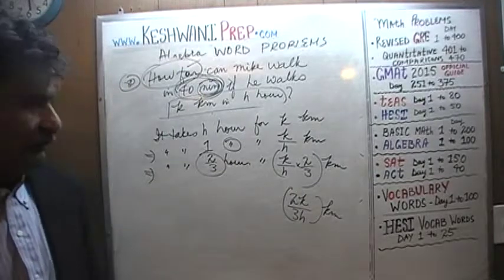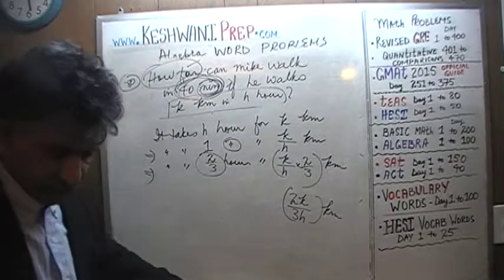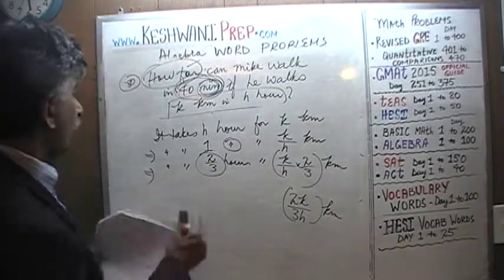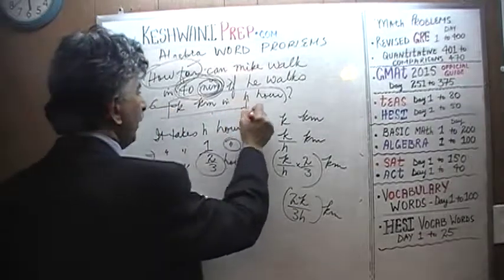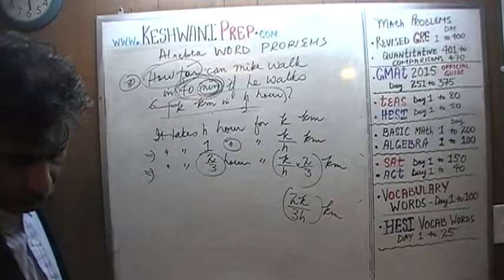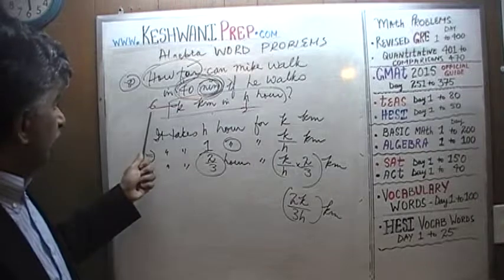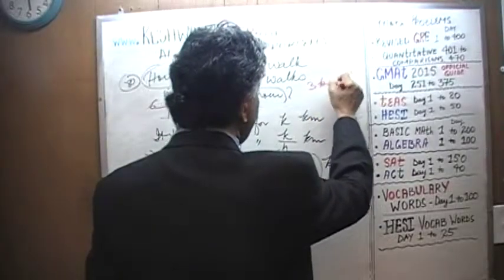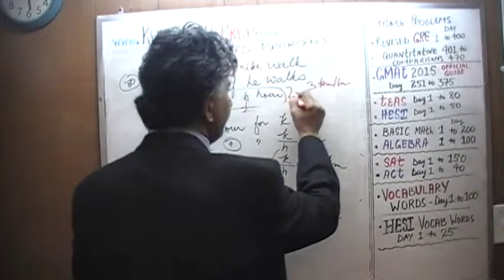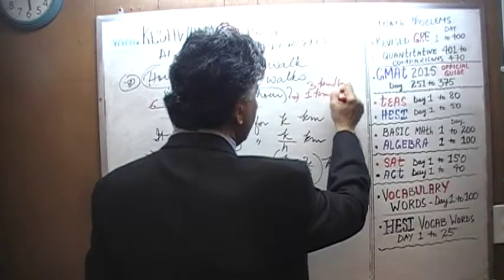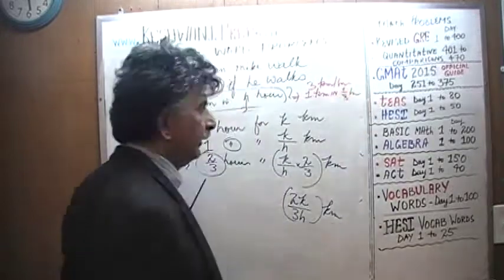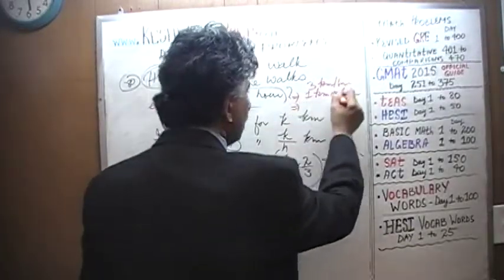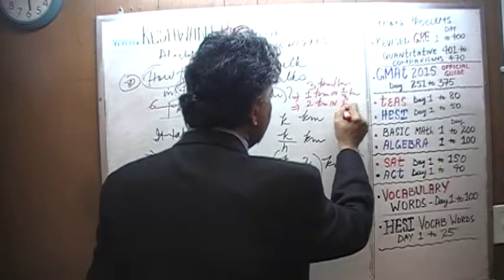And that's our final answer: 2K over 3H kilometers. Let's verify it quickly. We'll plug in: walking six kilometers in two hours. If you're walking six kilometers in two hours, you're walking three kilometers every hour. In two-thirds of an hour, you should walk two kilometers. Two kilometers is the answer we expect.